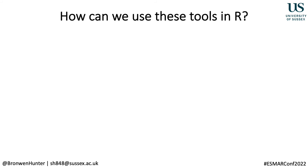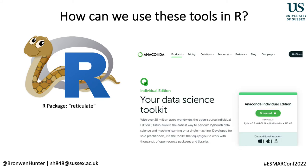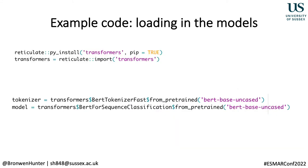While HuggingFace has made it really easy to use these transformer models in Python, there aren't any tools to make use of transformer models in R. This is where the Reticulate package comes in. Reticulate allows us to use Python libraries in R, and thus, if we're doing other stages of evidence synthesis in R, we can streamline our analyses. Before getting started with Reticulate, you need to make sure that Anaconda is installed on your computer to make use of Python. You'll also need to set up a virtual environment with either TensorFlow or PyTorch installed. Note that fine-tuning some of these models does require a GPU.